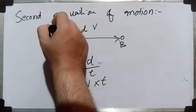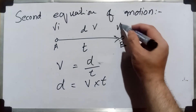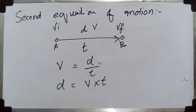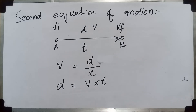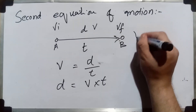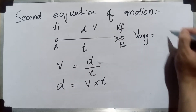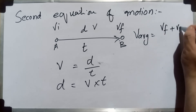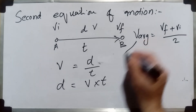But what if we had two velocities — an initial velocity at the start and a final velocity at the end? You don't have a single velocity; the velocity changes. So how can we find distance? Well, we can add the two velocities together to get an average velocity, and then multiply that average velocity by time to get the distance.